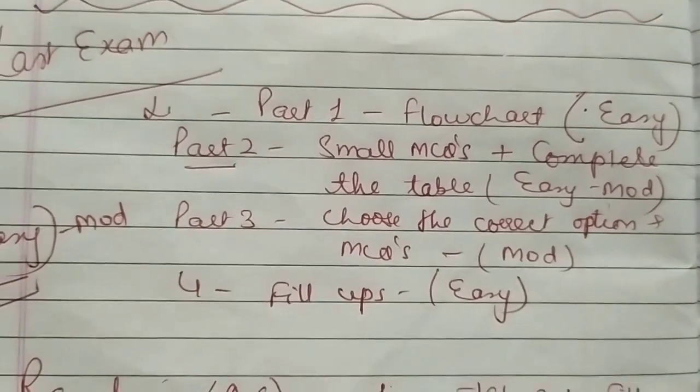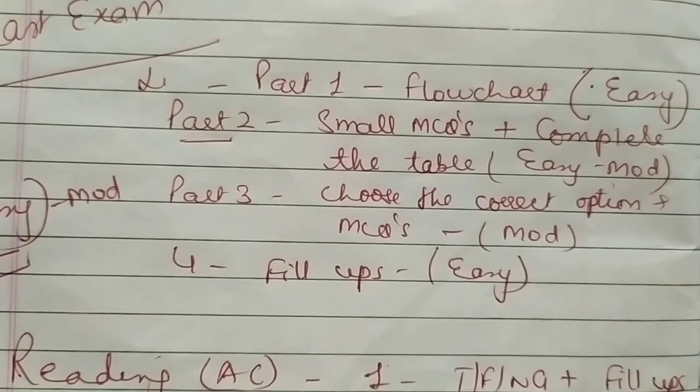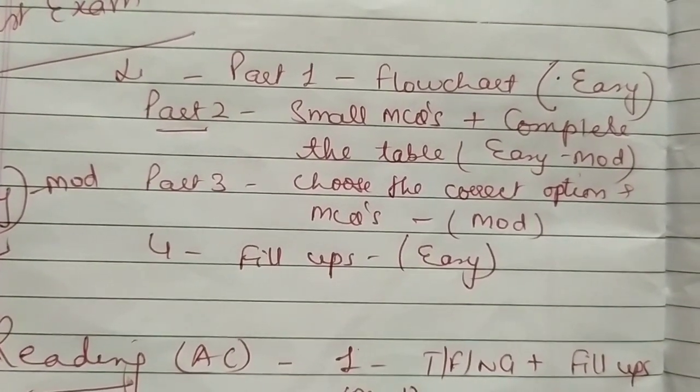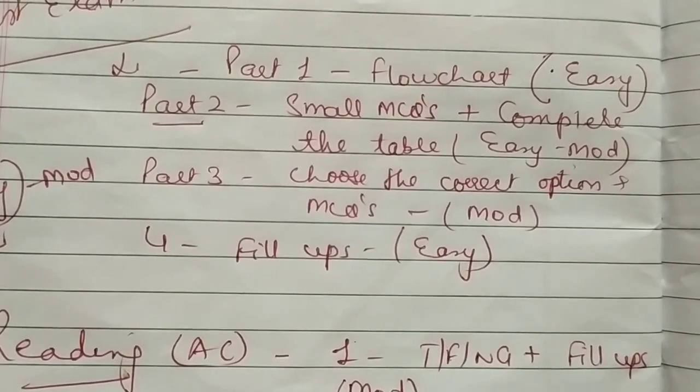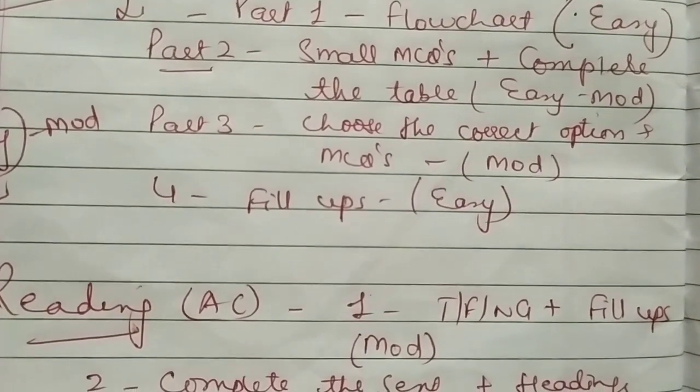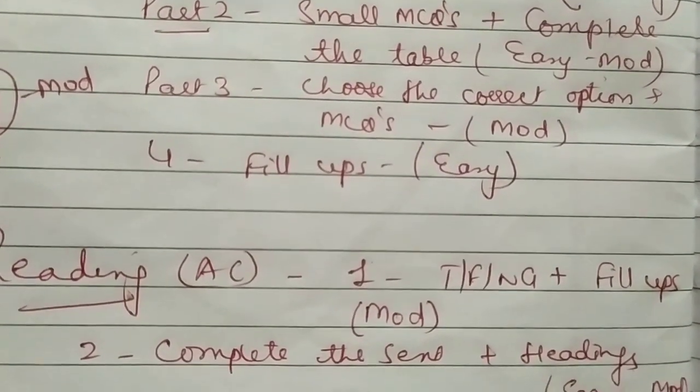For reading academic, passage one will consist of true, false, not given and fill ups which will be moderate. Passage two will be complete the sentences plus headings and it will be easy to moderate.